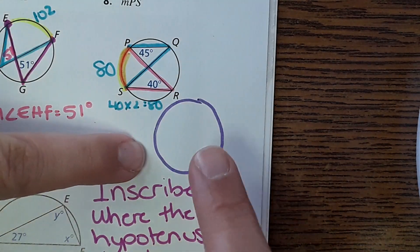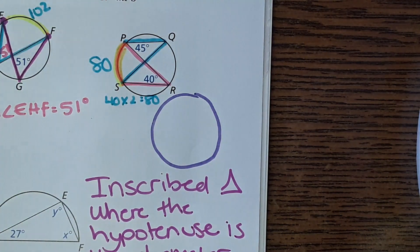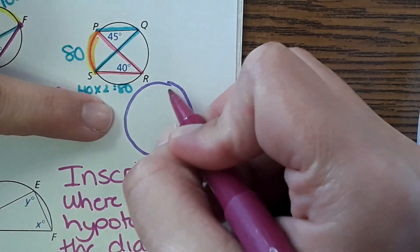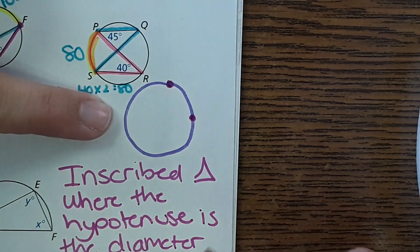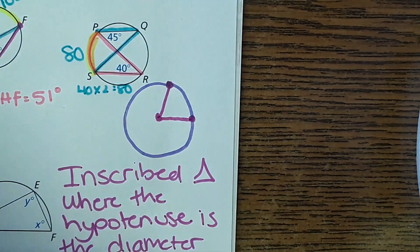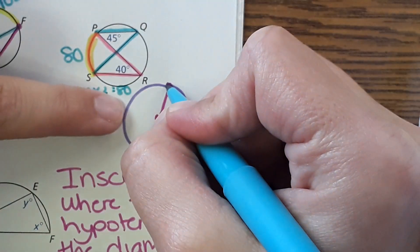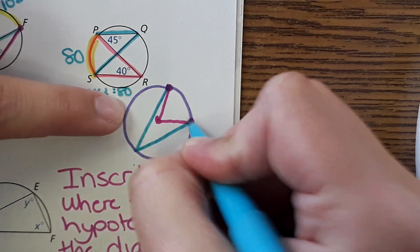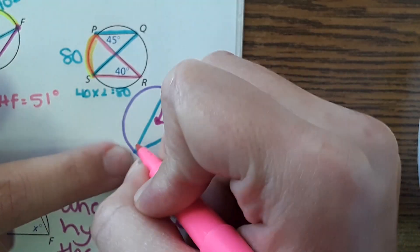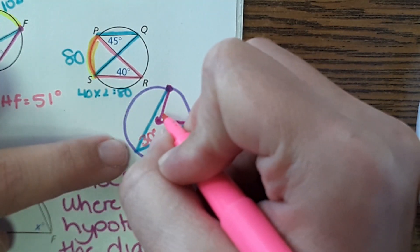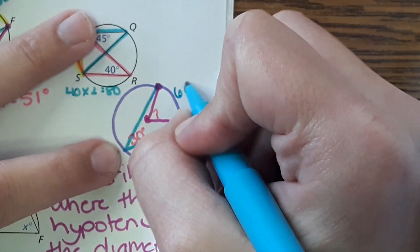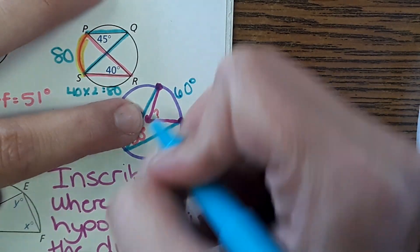I want to show one more type of problem from the homework and Khan Academy. Here we have two points, a central angle to the center of the circle, and an inscribed angle that goes all the way across. If the inscribed angle is 30°, you multiply by 2 to get 60° for the arc. The central angle equals that same arc, so the central angle is also 60 degrees.